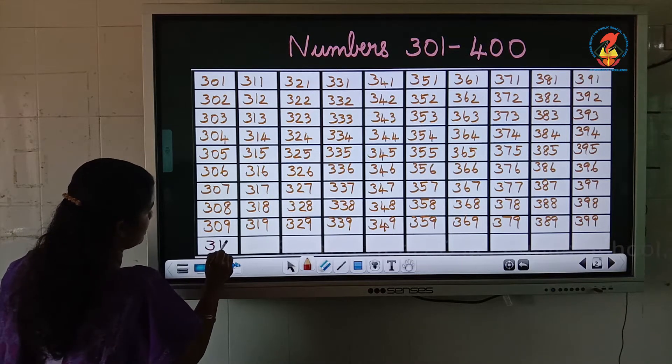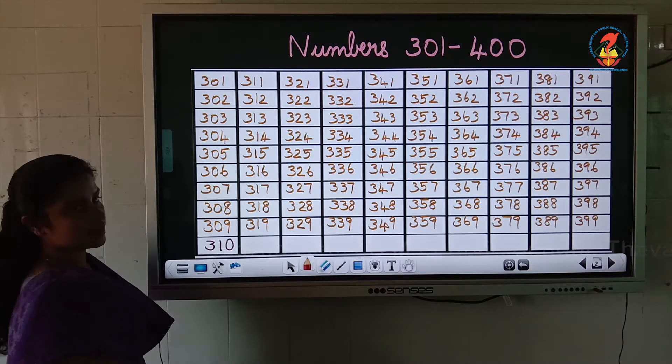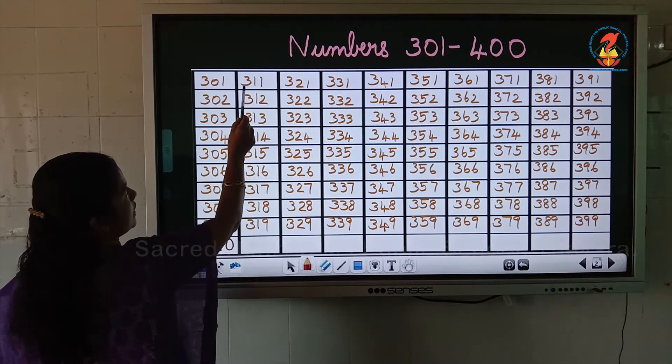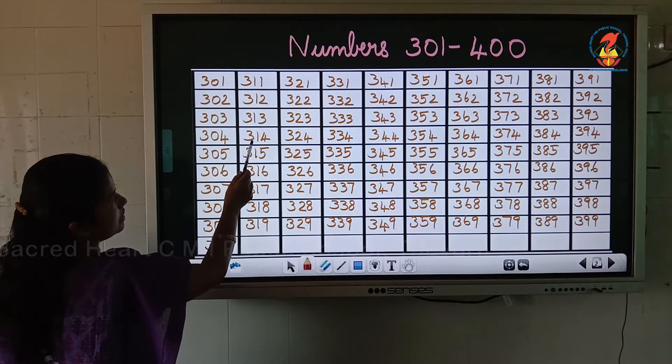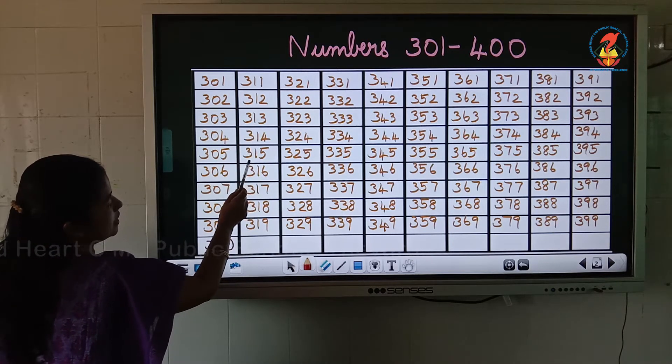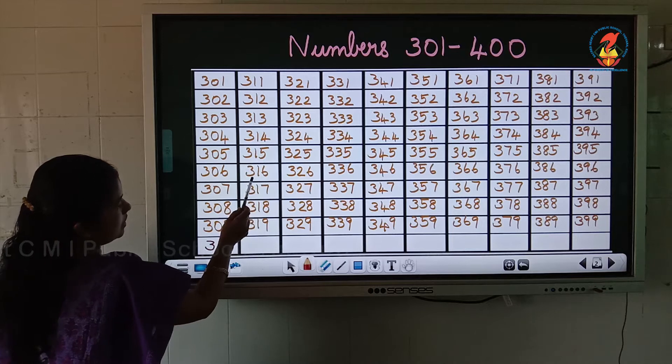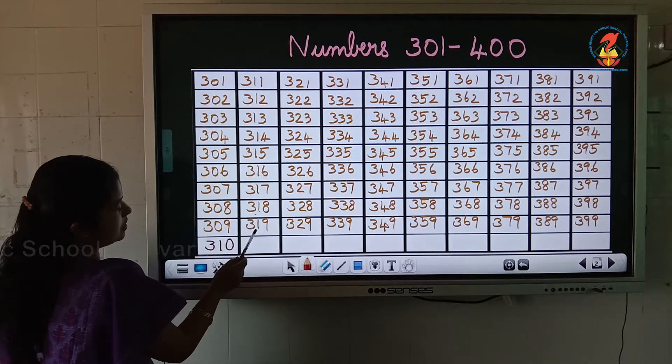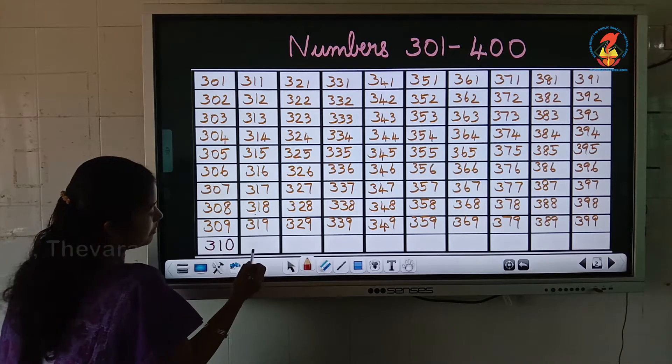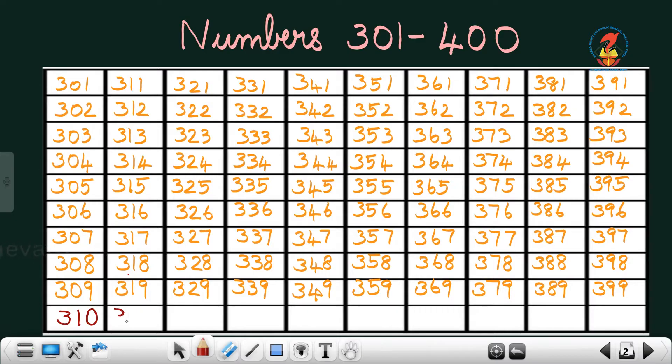310. After 310, 311, 312, 313, 314, 315, 316, 317, 318, 319. After 319, 320.